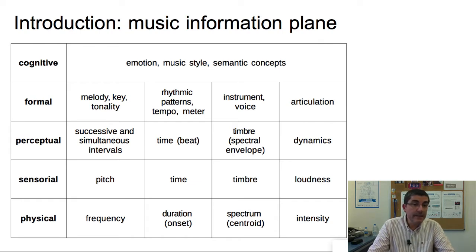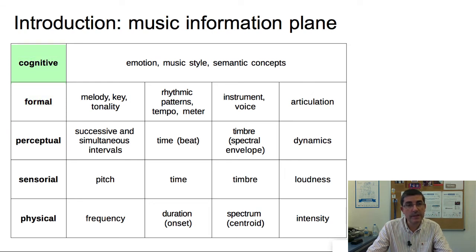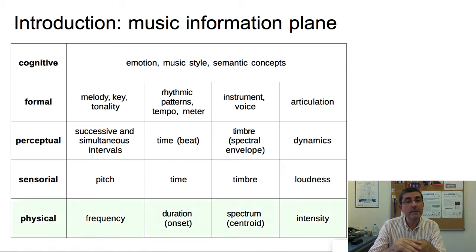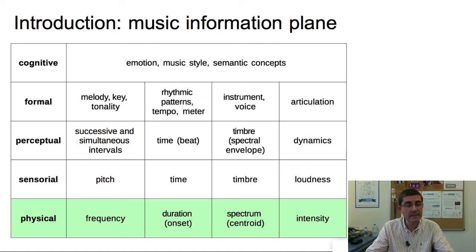We consider different abstraction levels — the left column shows these different abstraction levels — and we can go from the physical level, which is basically the lowest level we are dealing with, up to the cognitive level, the highest level we consider, with some steps in between. At the physical level, when we talk about sounds and music, we can talk about concepts like the frequency or the duration of the sound, the spectrum, and clear characteristics of the spectrum like the centroid, and also the intensity of the sound.